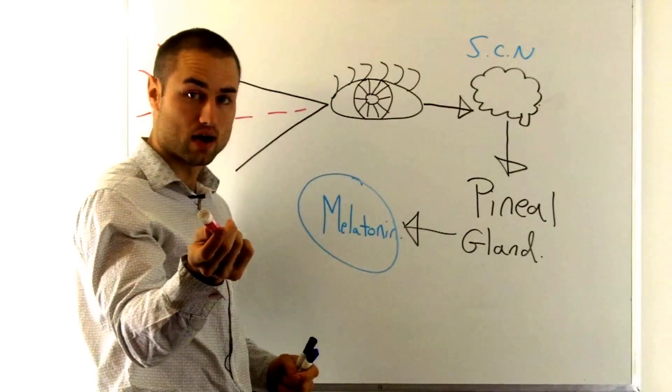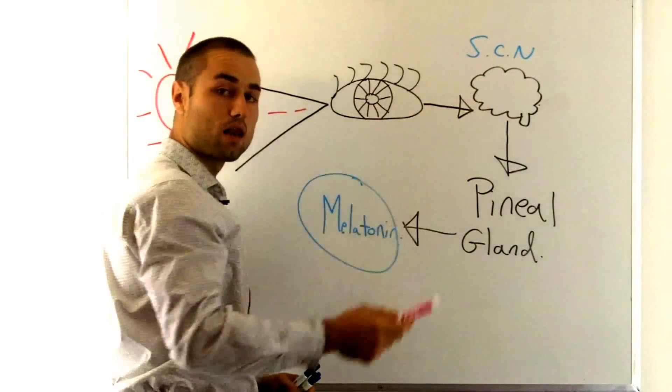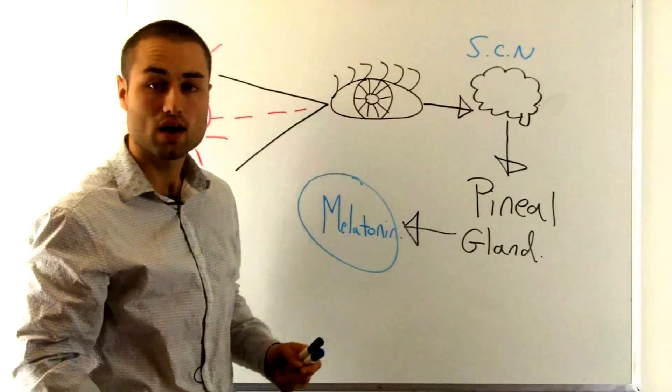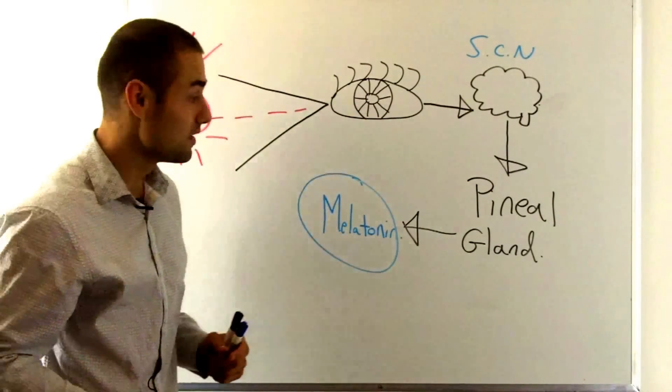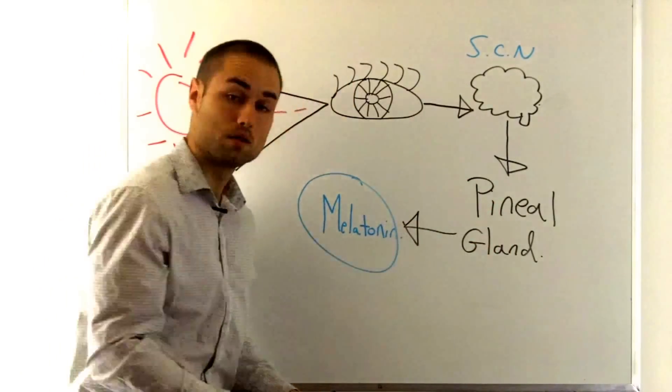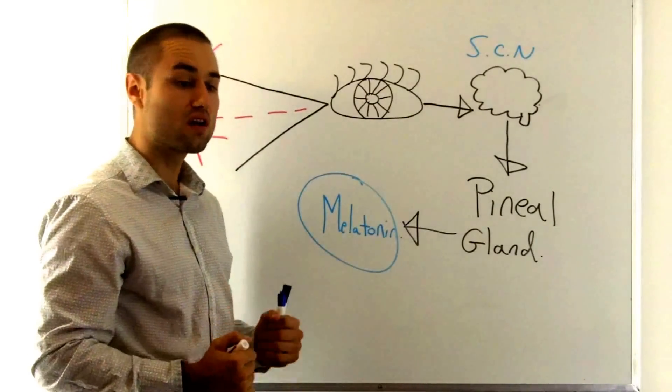Sending signals to a section in your hypothalamus called the suprachiasmatic nucleus. Now the suprachiasmatic nucleus sends a signal to another section in your brain called the pineal gland.